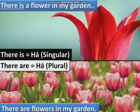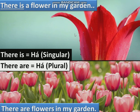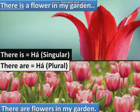Remember, 'there is' is used in the singular, and 'there are' is used in the plural. For example, look here: there is a flower in my garden — one flower, there is a flower. And look here, flowers: there are flowers in my garden — plural. There are: plural. There is: singular. There are: plural.